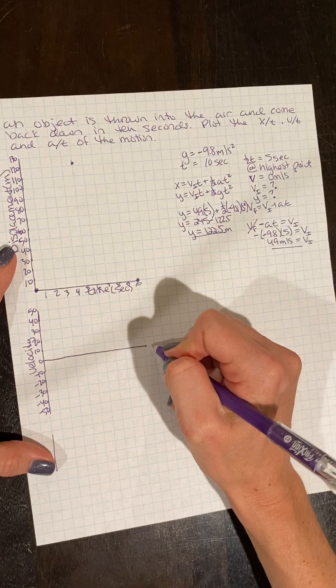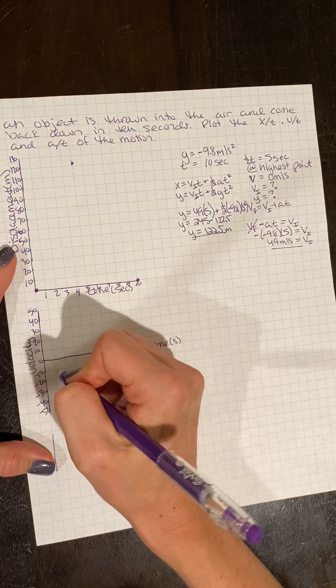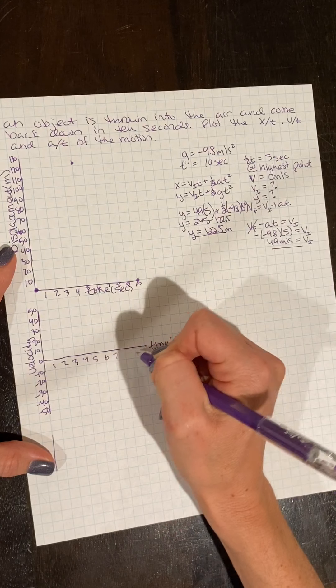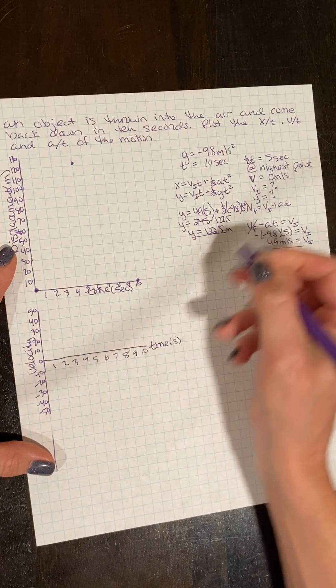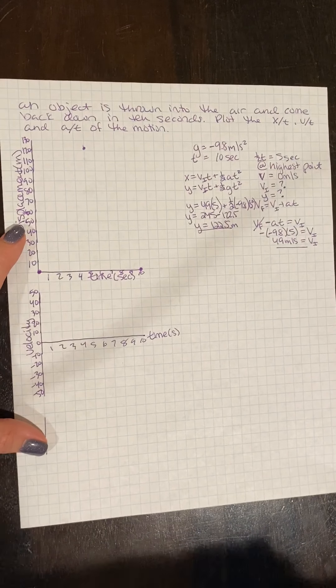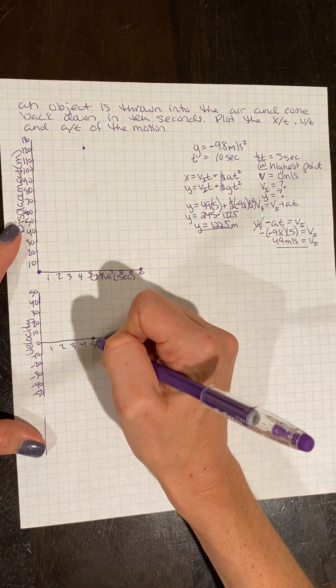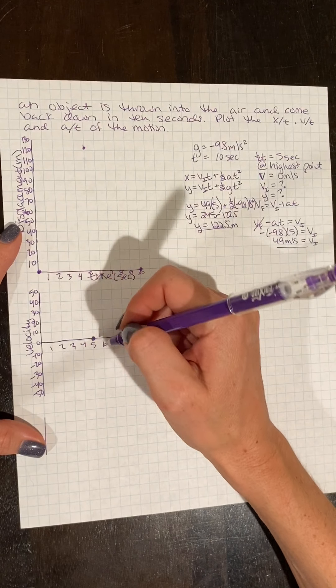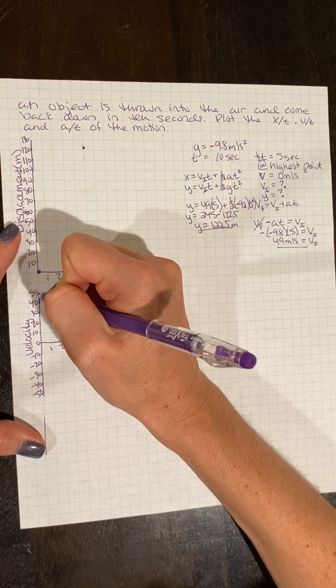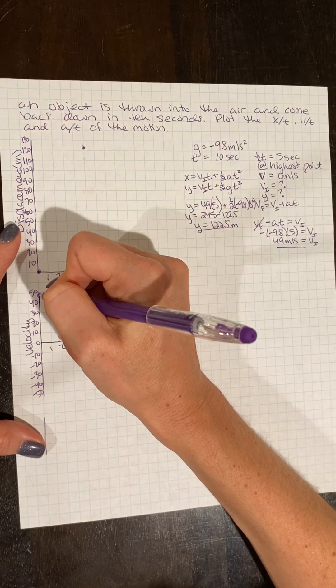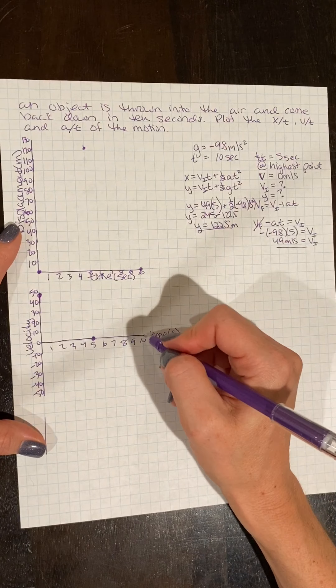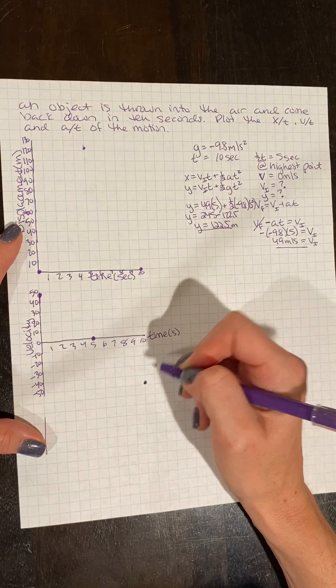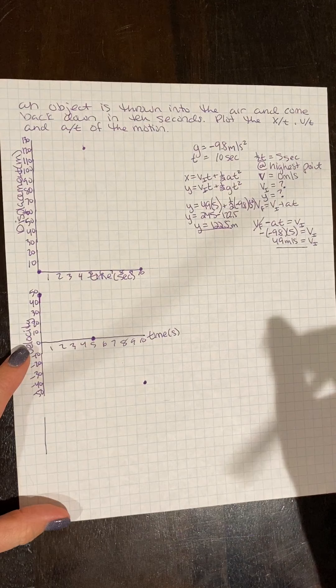So time in seconds, 1, 2, 3, 4, 5, 6, 7. I know that at time, 5 seconds, I'm at 0 because I'm at the highest position. I've slowed down. I'm starting at 49. And I know when I return back down, it's going to be at negative 49. So I have those parameters.